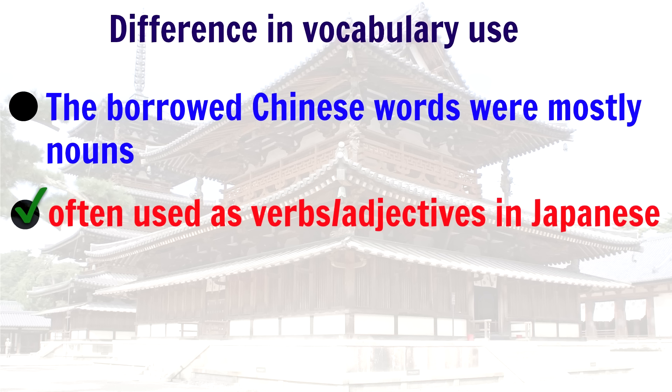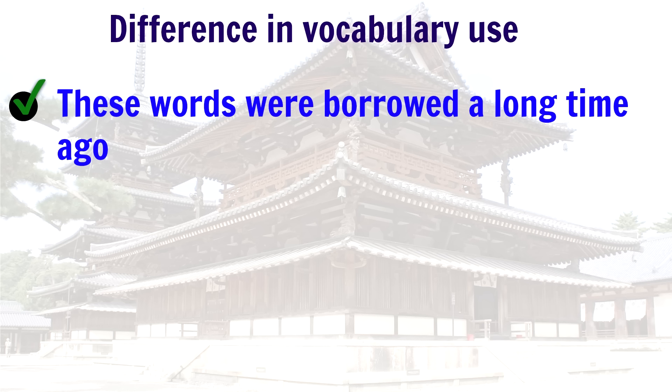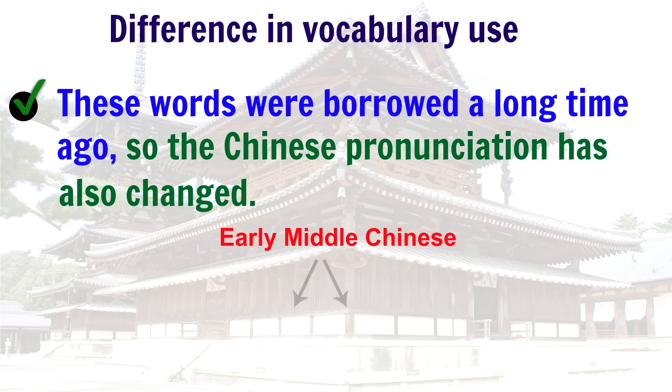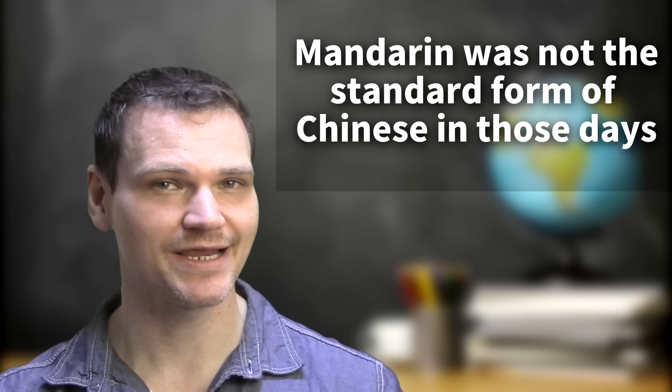That's just one way in which the vocabulary is used differently. But also, the pronunciation of those Chinese words that were borrowed into Japanese changed to match the Japanese phonological system, and that included the loss of the tones of those words. And also, these words were borrowed a long time ago, which means that the words have also changed in pronunciation in Chinese, so the pronunciation has diverged quite a bit, meaning that modern Japanese pronunciation and modern Chinese pronunciation of similar characters or words is quite different.